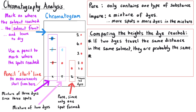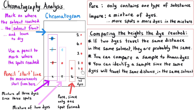We can also compare our samples to a set of reference values. Perhaps we could have reference values for a range of different red dyes and identify that the red dye present in Z is a particular one because that known sample travelled the same height as Z. The red colour in X and Y travelled the same height as another known dye, and none of the other known red dyes were present in any of our three samples.